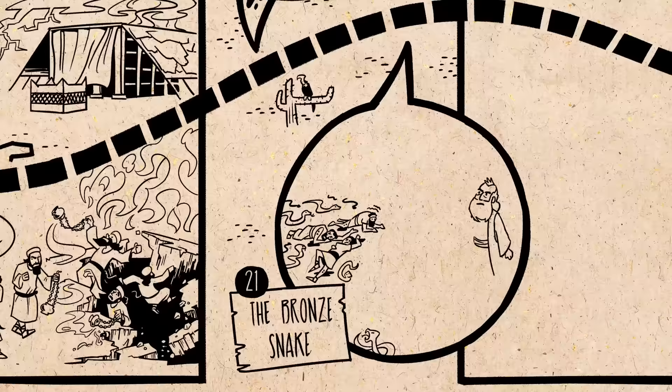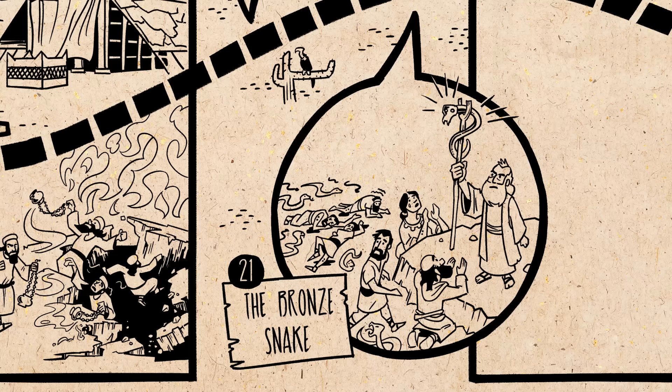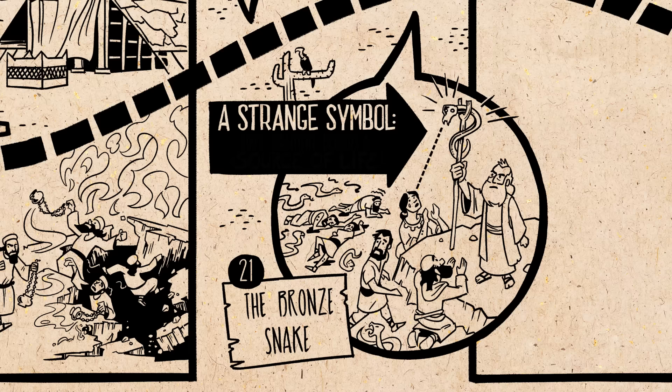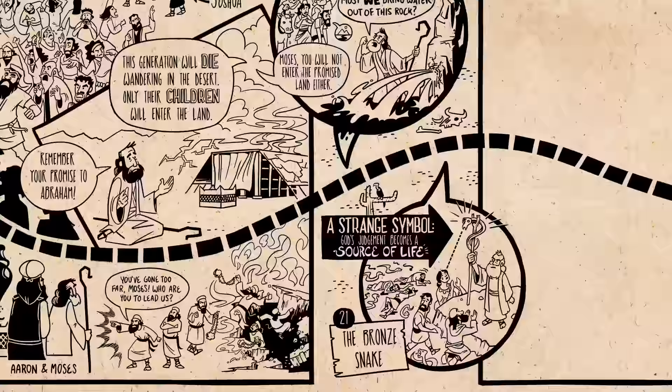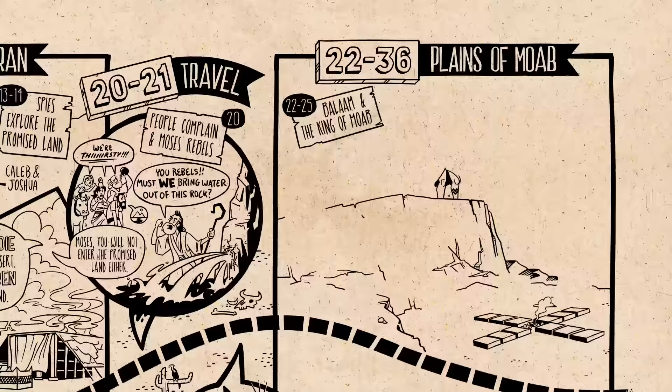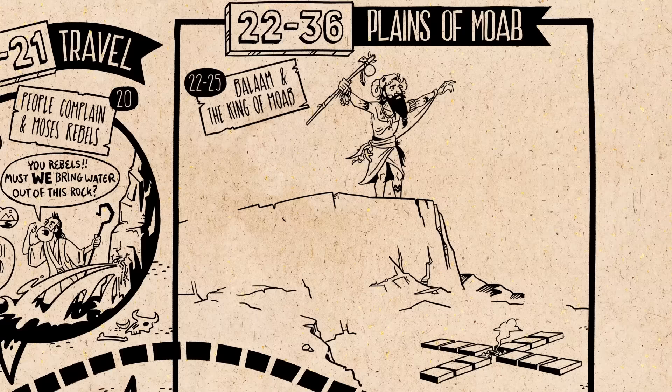After this, the Israelites rebel yet again, and God brings a very strange judgment on them — venomous snakes that come and bite the people. Moses again intercedes on behalf of the people, and God tells Moses to make a bronze snake and lift it up on a pole, so that whoever looks at it would be healed of the poisonous snake bite. It's a very strange symbol, but it speaks to the challenge God has in being faithful to his covenant. He's right to bring justice on Israel's evil and sin, but even God's justice gets transformed into a source of life for those who will look to God for healing.